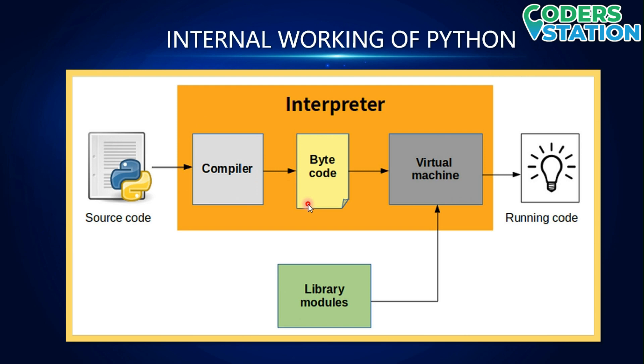Bytecode is nothing but code written in a machine-readable format. This code is understood only by the machine, and once created, it can actually run on any other computer. Then we have the virtual machine — a machine which does not occupy space on the hard disk physically, but virtually accesses your hard disk by taking some space in RAM.